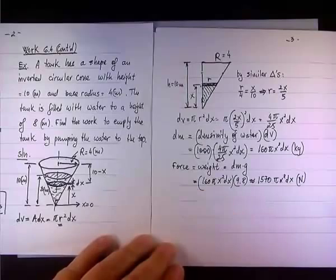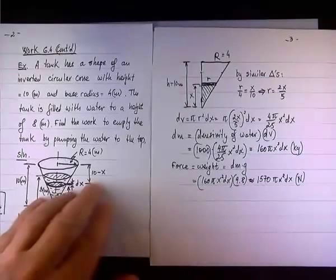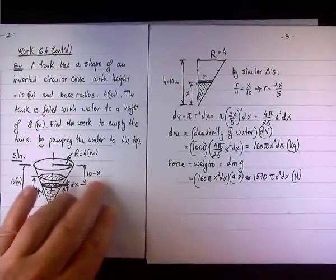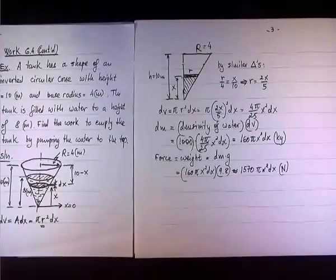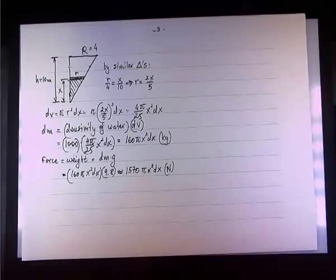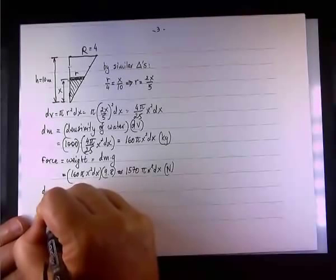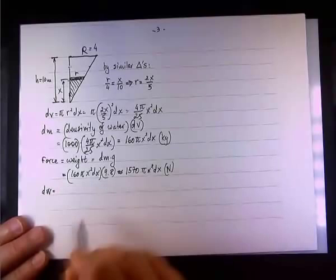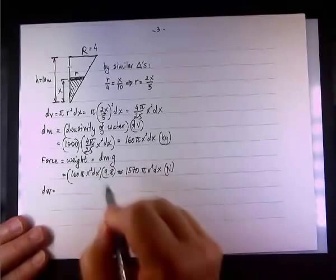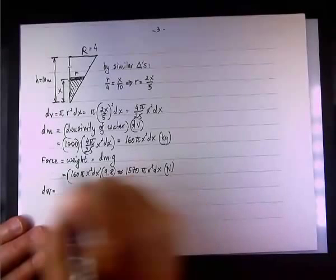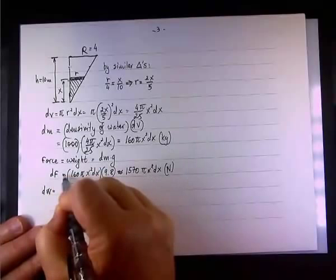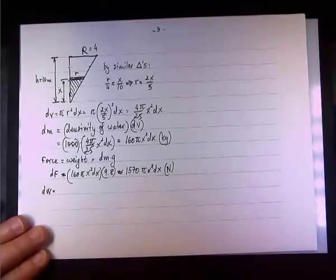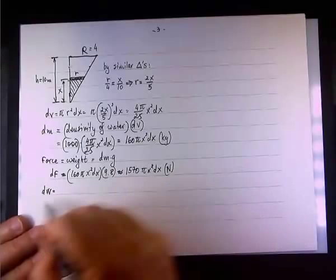The distance we discussed that, going back to the previous sketch, the distance that we move this element of mass is 10 minus x. 10 minus x, I'm sorry. 10 minus x meter. I don't know what I said, but whatever I said made no sense. So, going back to our work.